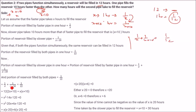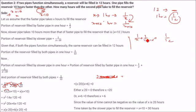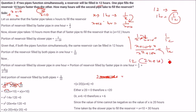This is what we solve. X plus 10 goes here, X goes here: X plus 10 plus X over X into X plus 10 equals 1 by 12. That is 2X plus 10 over X squared plus 10X equals 1 by 12. We multiply 12 with 2X plus 10, giving 24X plus 120 equal to X squared plus 10X.